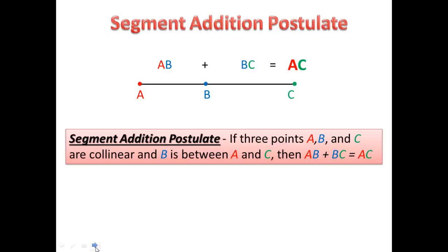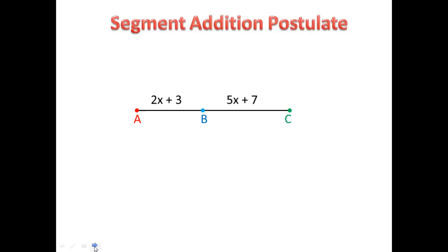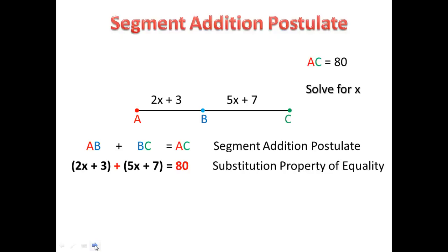Let's apply the segment addition postulate. We're given this information and that the length of the whole segment is 80. We want to solve for x. Let's set up an equation using the segment addition postulate by substituting this expression for AB and this expression for BC.